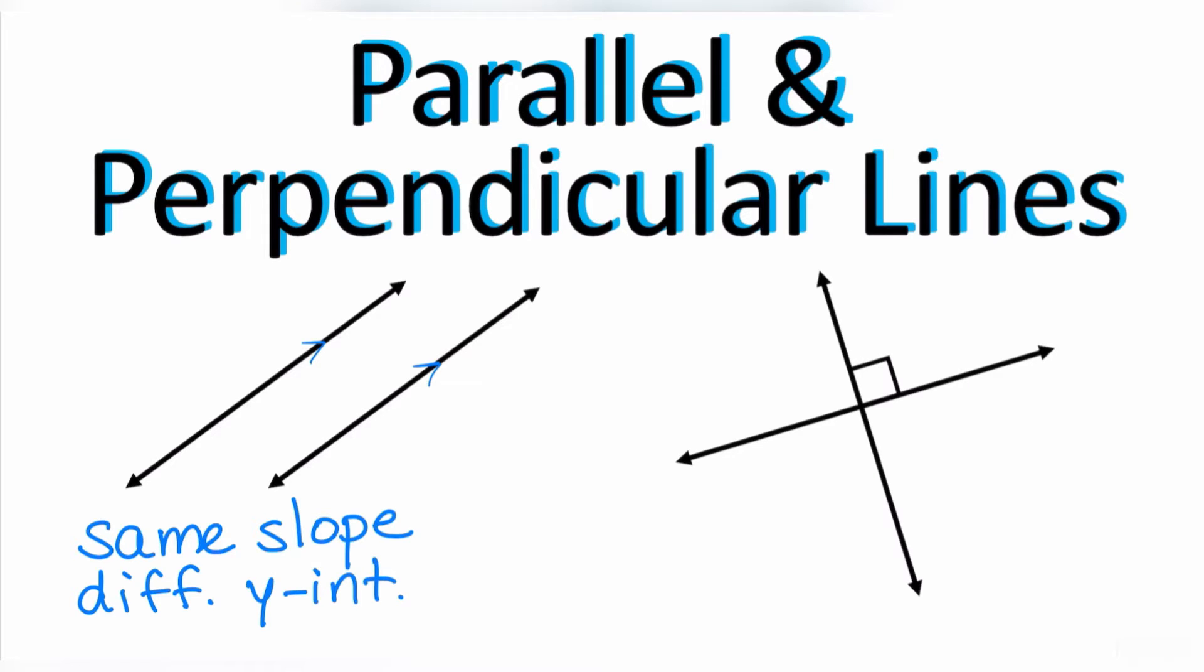Perpendicular lines have slopes that are negative reciprocals of each other. What does that mean? That means that if one slope is one half, the other slope has to be flipped and the sign has to change. So it's going to be negative 2 over 1, which is just negative 2. So if this is not the case, if you don't have slopes that are negative reciprocals, and your slopes are not exactly the same, then the lines are going to cross, but they're not going to be perpendicular.